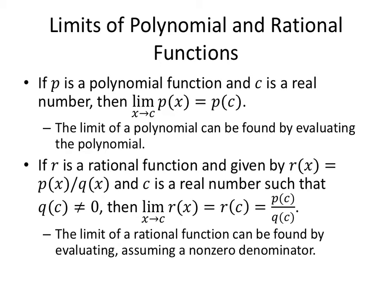If P is any polynomial function and C is a real number, then the limit as X approaches C of that polynomial is just the polynomial evaluated at C. So the limit of a polynomial can be found by evaluating the polynomial every single time. If R is a rational function given by P of X over Q of X and C is a real number such that Q of C is not zero, so we can't have a denominator of zero, then the limit as X approaches C of the rational expression is just the rational evaluated at C. So the limit of a rational function can be found by evaluating as long as you don't have a zero in your denominator.